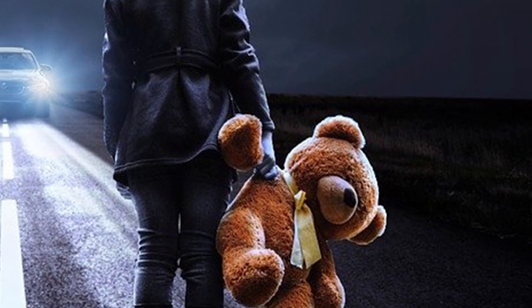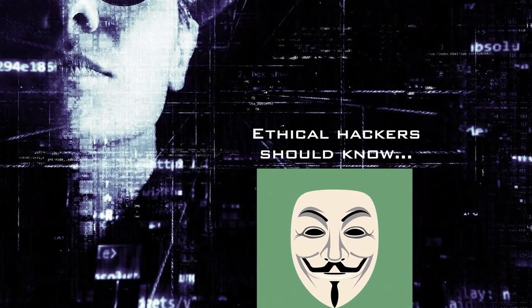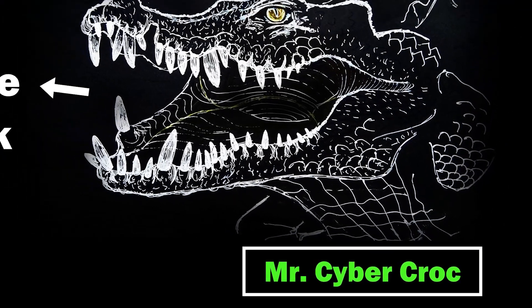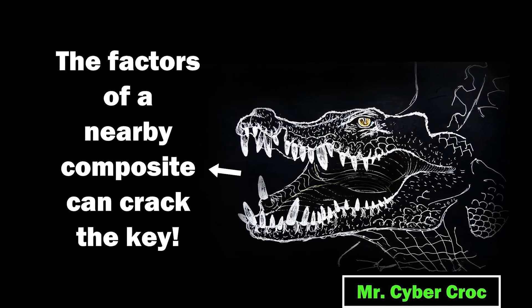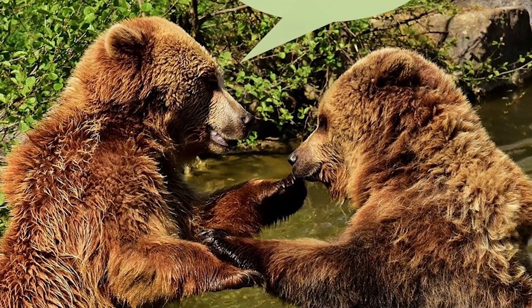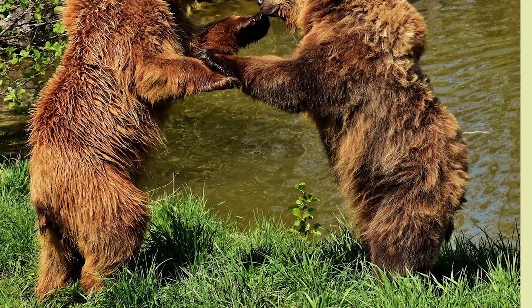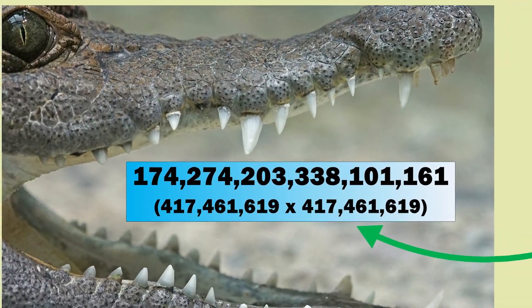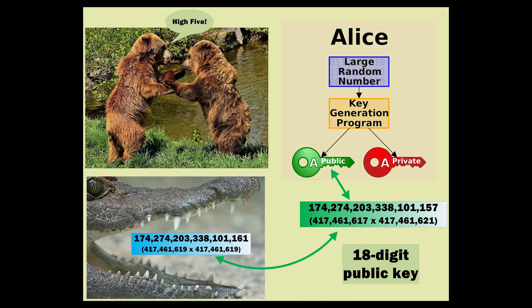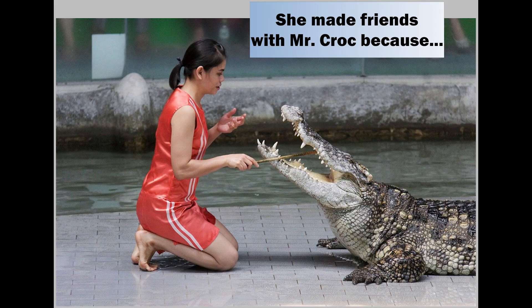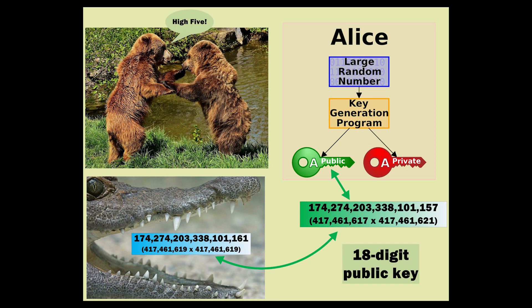In her sleep, she searched for me. But if there's one thing ethical hackers know, it's what Mr. Cyber Croc bellowed out: the factors of a nearby composite can crack the key. The bears of the forest gave Cyber Bear Birdie a high five because he took what he had learned from Mr. Cyber Croc to crack an 18-digit public key. In the end, Little Lady Alice made friends with Mr. Croc because he helped Cyber Bear Birdie from Boat crack an 18-digit public key.